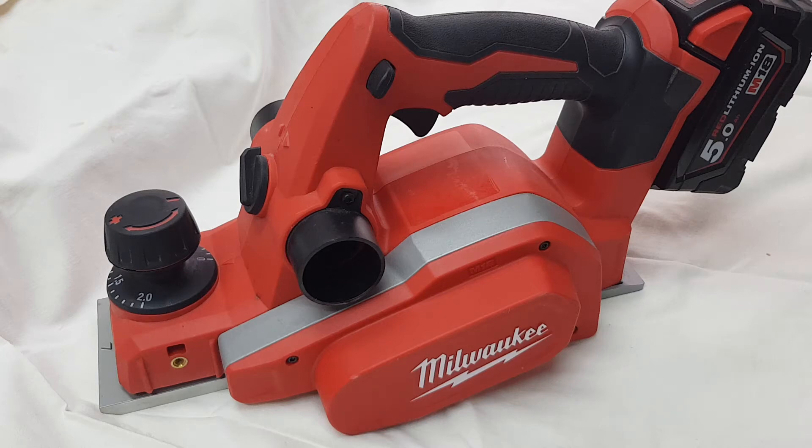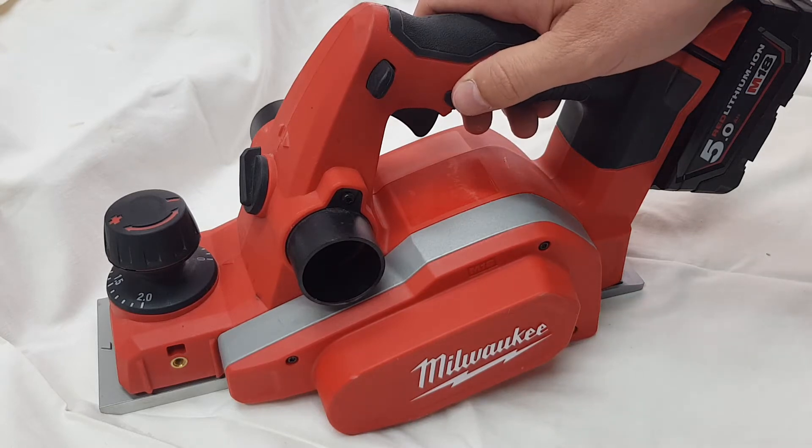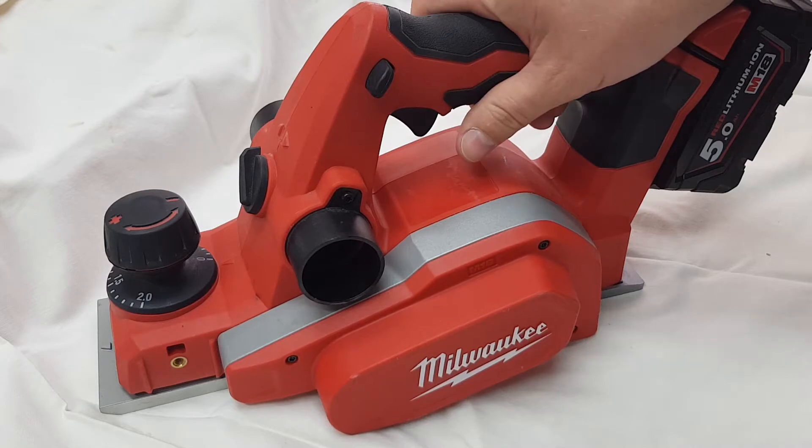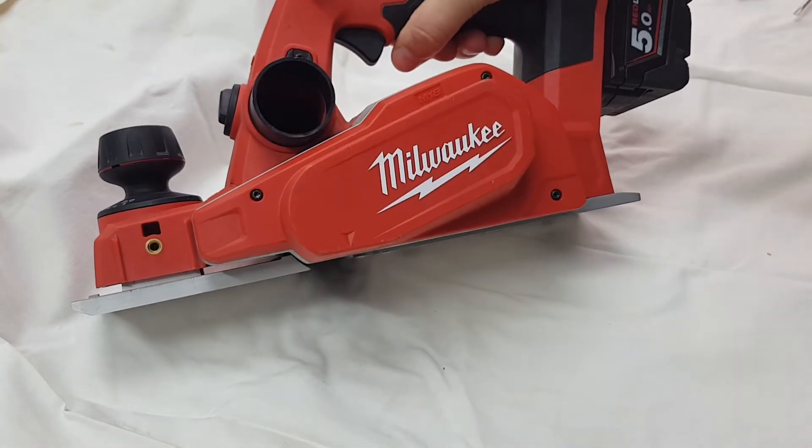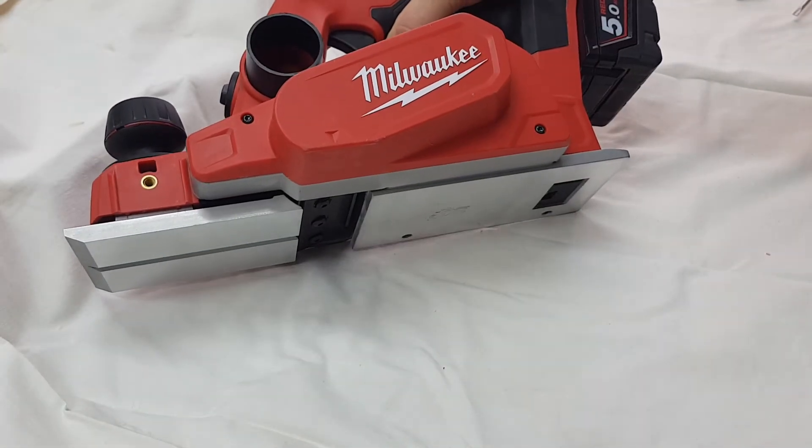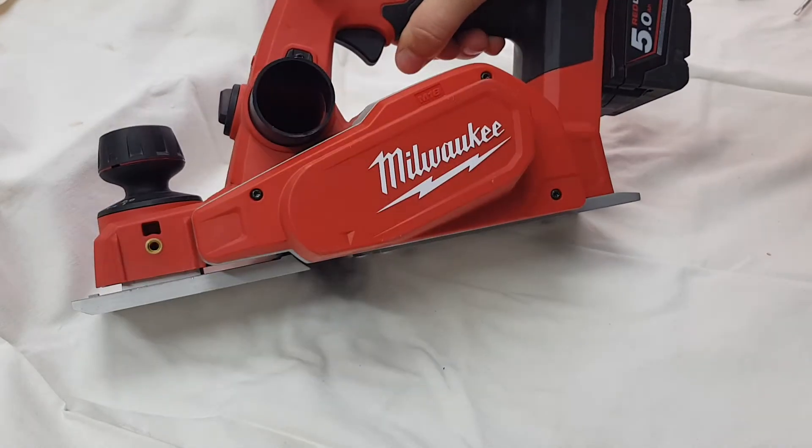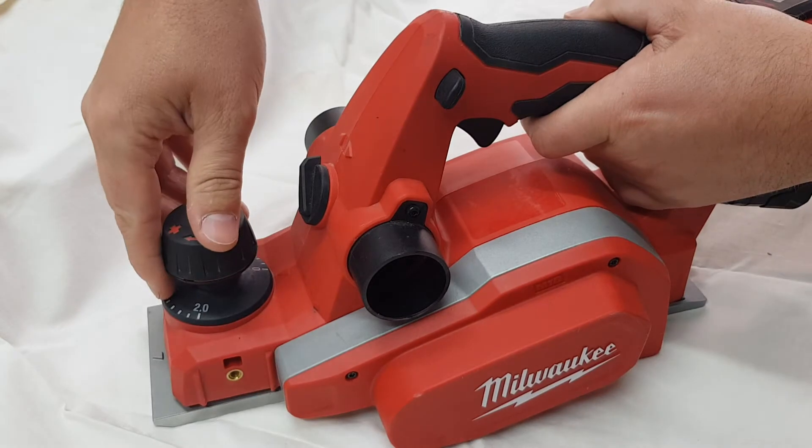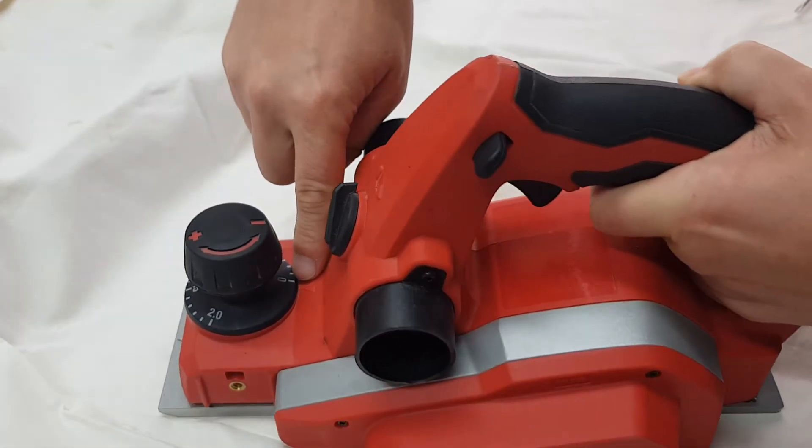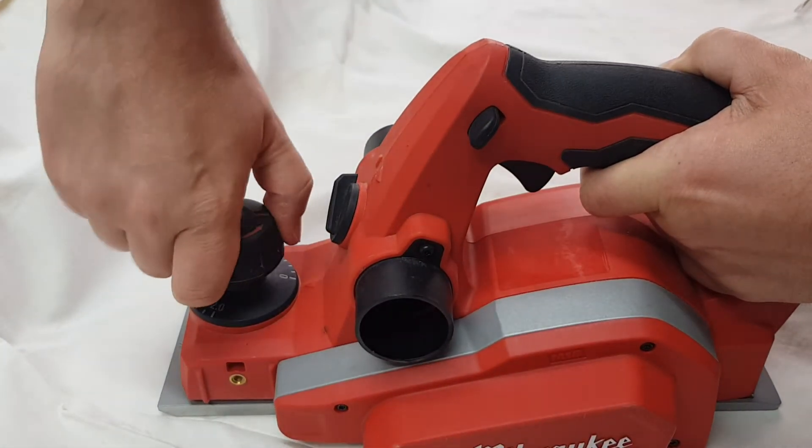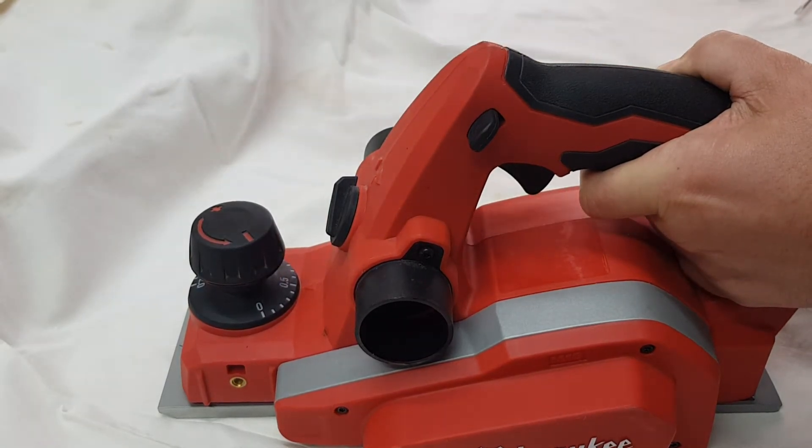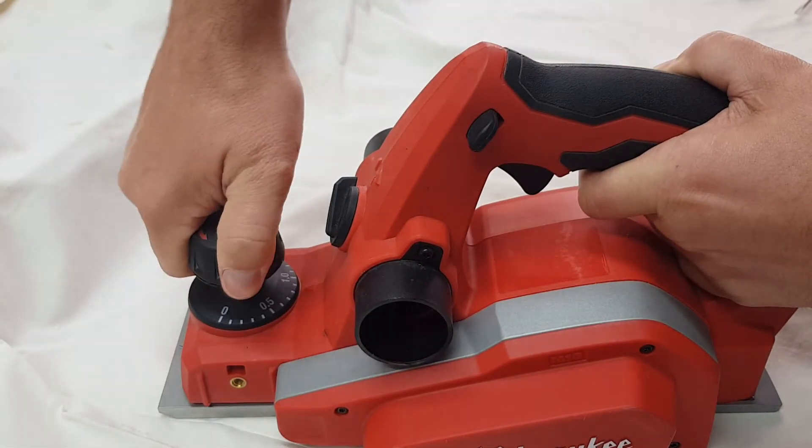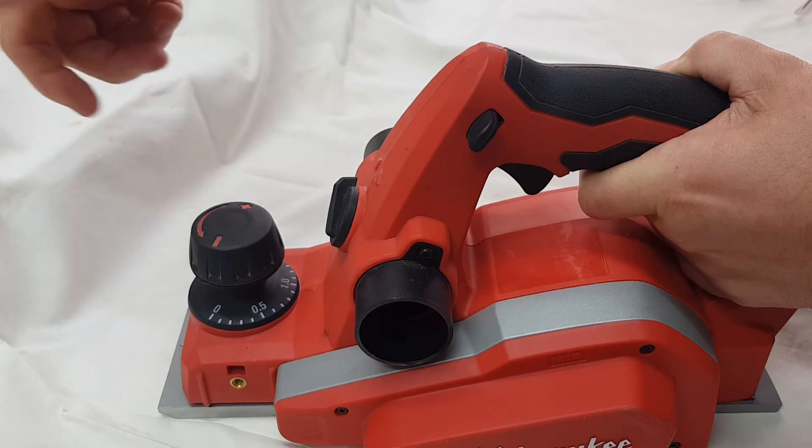Okay, so this is the Milwaukee M18 BP battery planer. We're going to show you how to adjust the front shoe calibration to get a nice accurate cutting depth or planing depth. So when it's set for zero, it should take off nothing. If we go to 0.5, take off half a mil, and set to one, one millimeter, and the same thing for two should take off two millimeters of material.